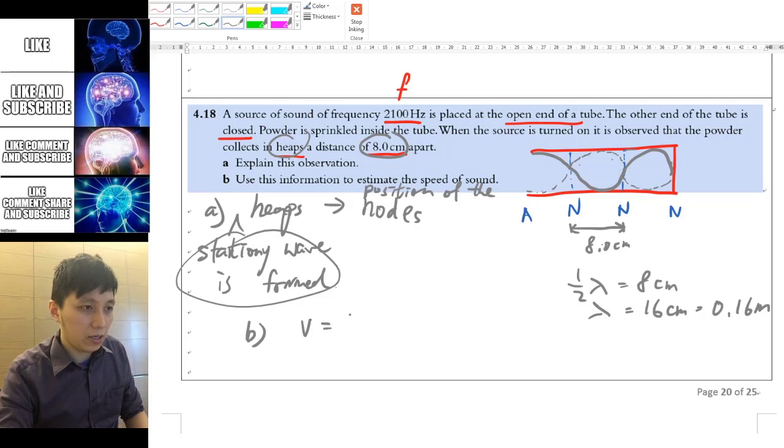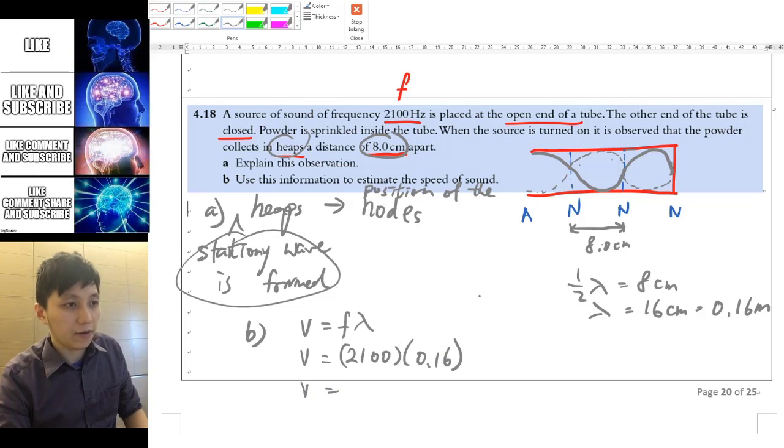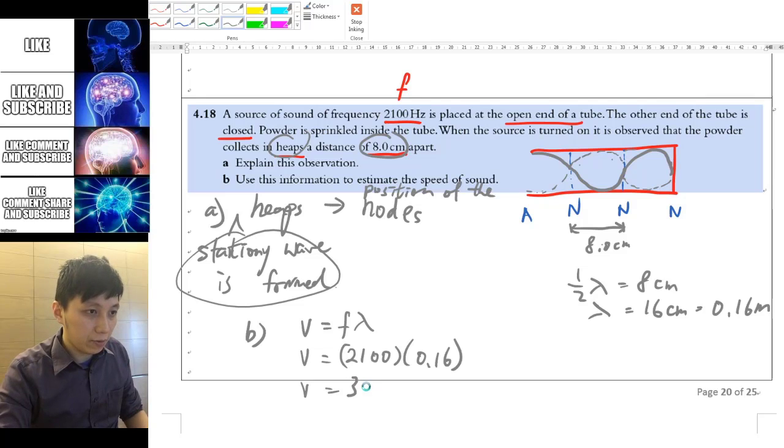then we can do this. V equals F lambda and then V would equal to the frequency 2100 and 0.16. And therefore, you can find the velocity, which is very sensible, to be 336 m per second, right? Very close to what we have normally.